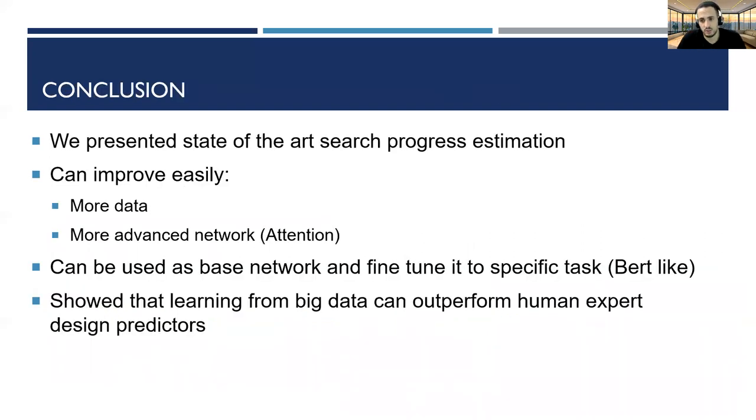As a conclusion, we presented state-of-the-art search progress estimation in all three regimes. Our algorithm can be improved in a number of ways. First, by having more data. Second, using more complicated architecture like attention. Using attention can give us explainability, which features are more important and why the network chose this prediction.